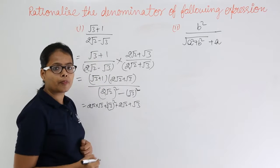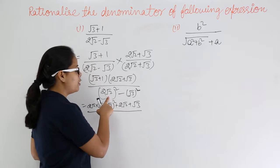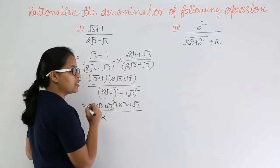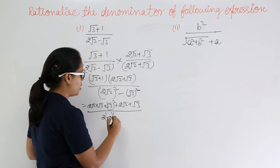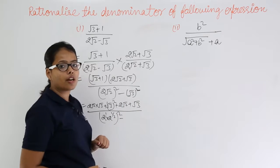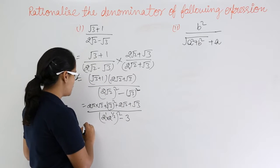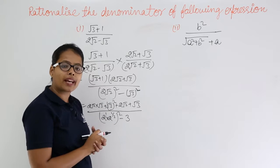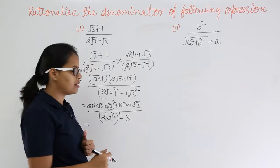So after multiplying the numerator this will become the expanded form. Now when you solve the numerator: root 3 multiplied with root 2 gives root 6. Root 2 into root 3 can be written together as root of 2 times 3, which means root 6. So you get 2 root 6.